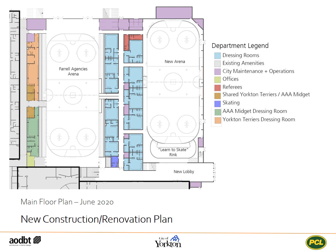Looking closer at the main floor, many of the service spaces for the ice surfaces will be found. This includes dressing rooms, service spaces, and offices. Many of these features will be examined in other videos. A new feature added is a learn-to-skate rink, located off the second ice surface. This popular feature allows younger users to skate in a less threatening environment, visible from the new lobby space.